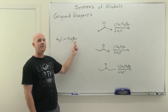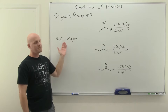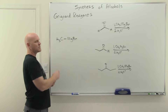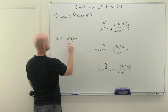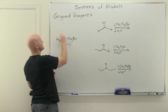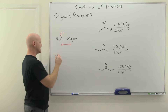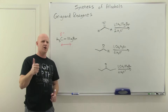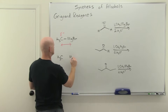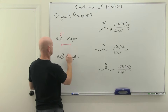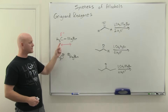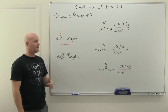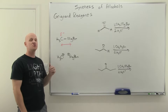The Grignard reagent is an organomagnesium halide, where the halide is typically chlorine, bromine, or iodine. With this polar carbon-magnesium bond, carbon is the more electronegative of the two atoms and carries a partial negative charge. This bond is between a metal and a non-metal. If we considered it ionic, carbon would carry those two electrons and become a carbanion, with a magnesium cation.